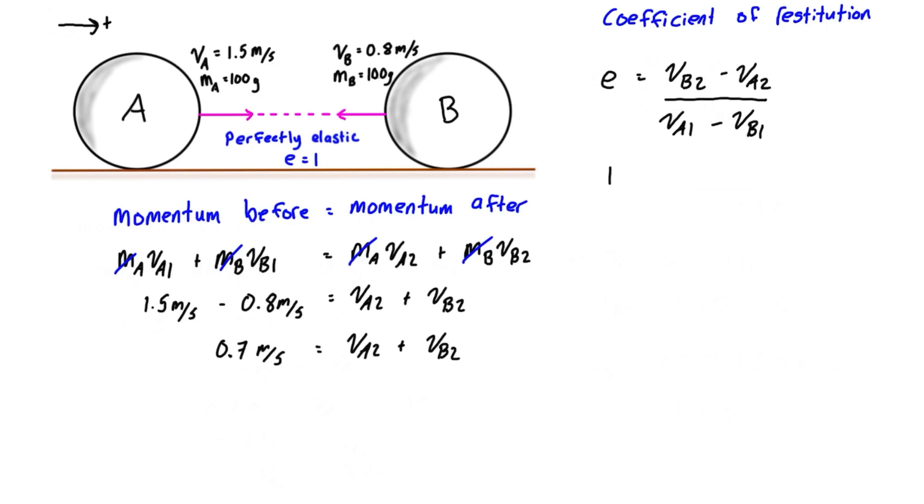So we can fill out what we have here. We have 1 is equal to the top, which is unknowns. VB2 minus VA2 over the bottom, which we have. So that's 1.5 meters per second minus negative 0.8 meters per second. So the relative velocity on approach is just 1.5 minus 0.8. That's 2.3. And if we multiply that by both sides, we can basically just bring it up to the side. So we have 2.3 meters per second is equal to VB2 minus VA2.